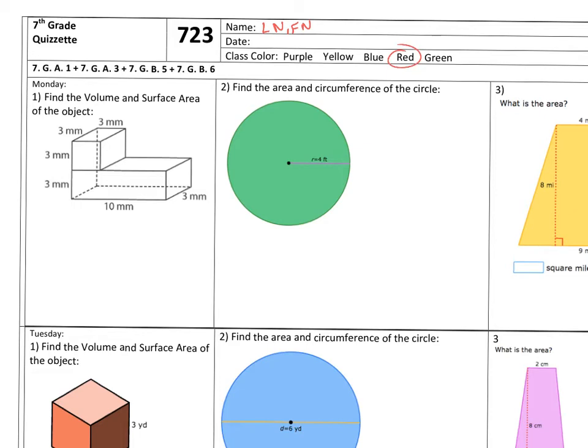Number one says, find the volume and surface area of the object. I went ahead and put the most difficult example on Monday number one, so hopefully all the other number ones of the week are just a little bit more manageable. Here we have a compound three-dimensional figure. We have a rectangular prism, and then we have, based on the measurements, this is supposed to be a cube because the measurements are 3 by 3 by 3.